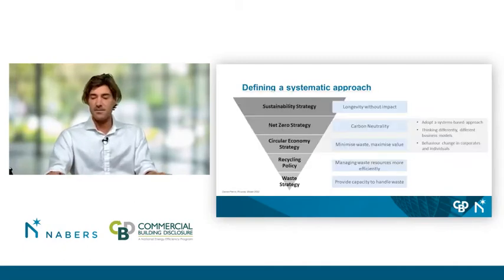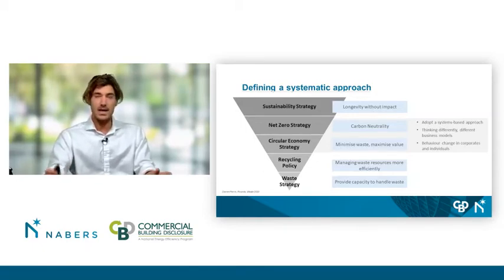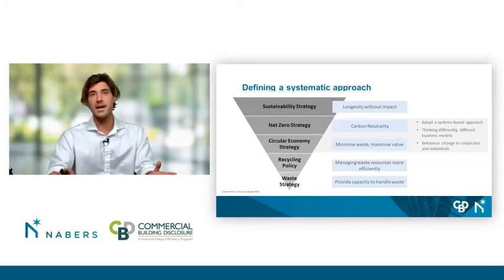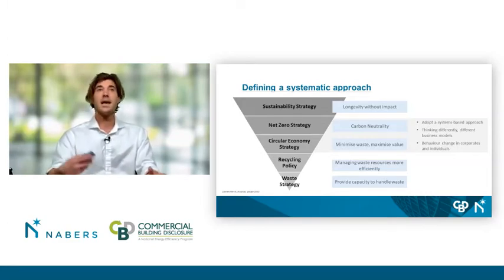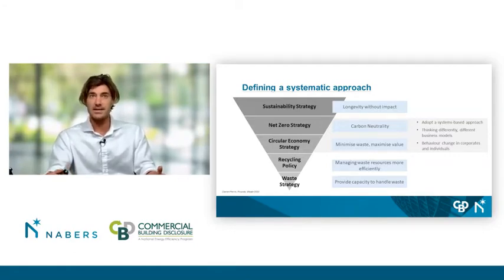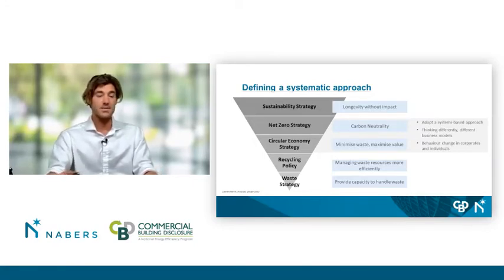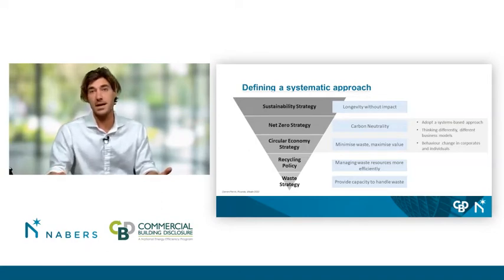I want to highlight this with a slide from Darren Perrin, a great consultant who works with Ricardo in Australia. It's a hierarchical structure of strategies and policy that puts in context where we need to be when talking about sustainability, circular economy, and waste. Traditionally, waste has always been about a capacity to handle materials. When we had recycling policies, it was about managing materials more efficiently or getting them into the right bin. A circular economy strategy starts addressing how we minimise waste and maximise value, linked to net zero strategies and overall sustainability.